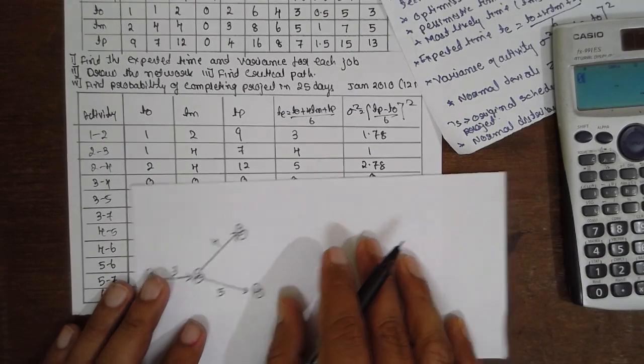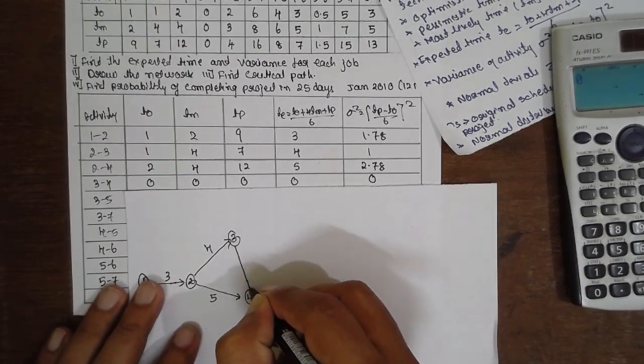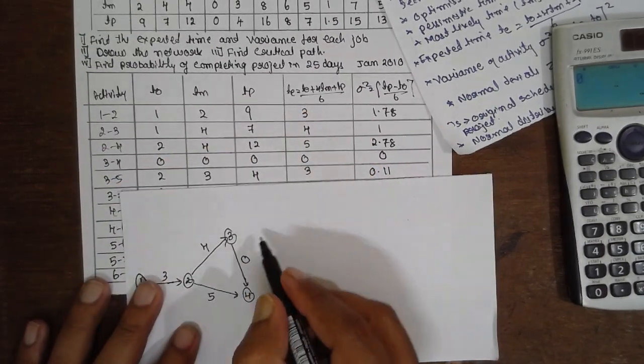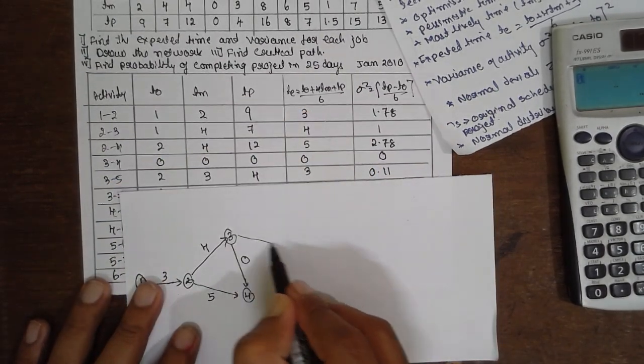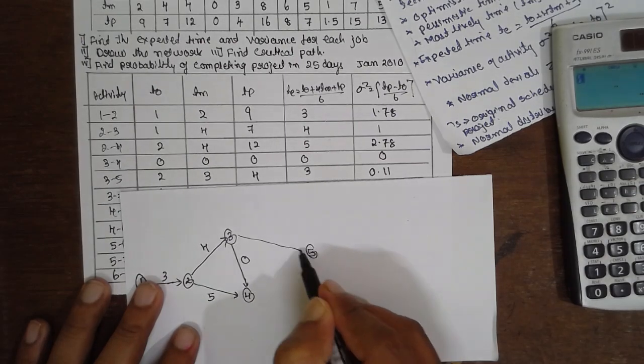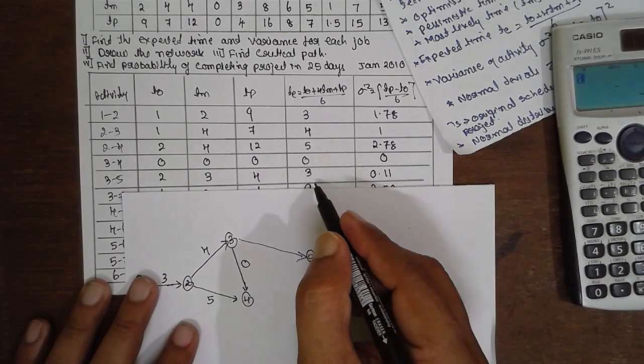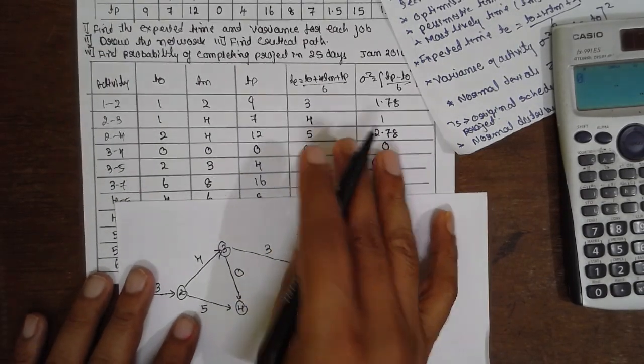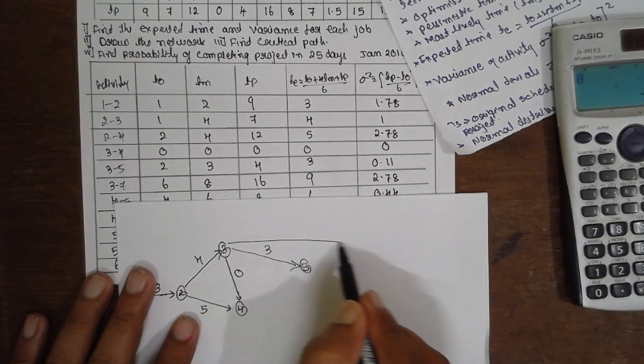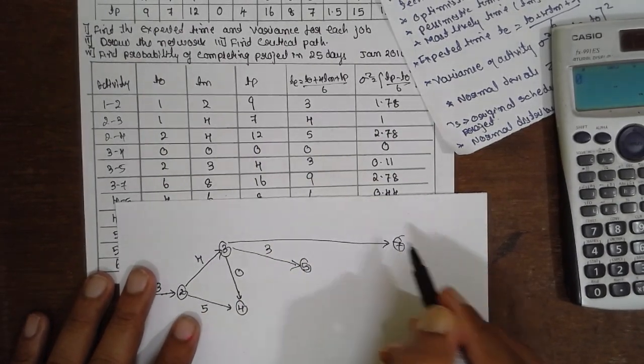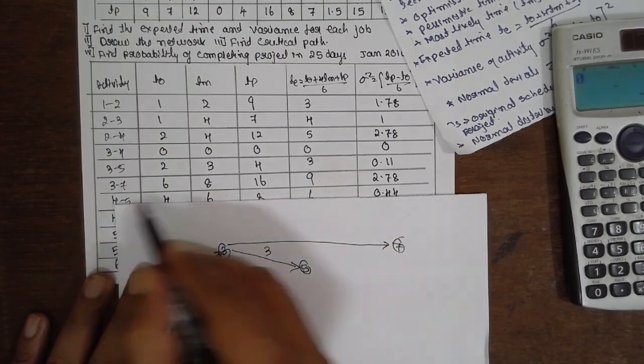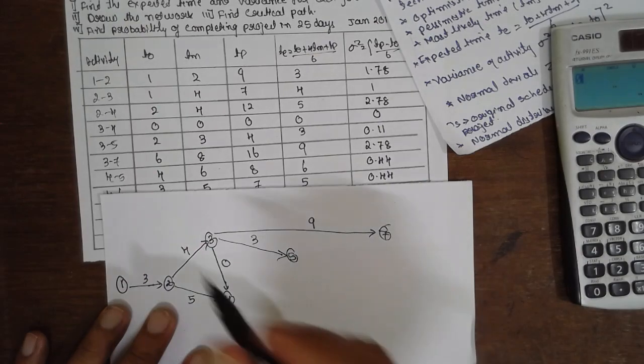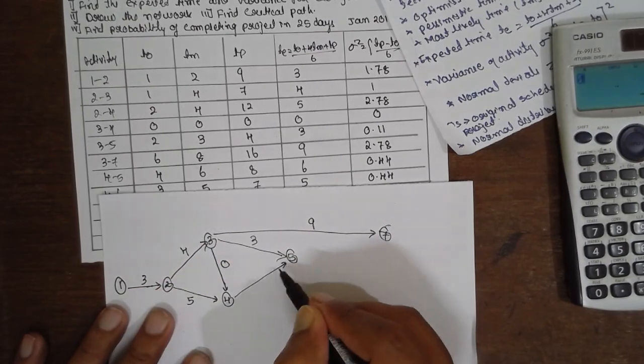The value is 5. 3-5, 3-4. The value is 0. 3-5. 3-5, the value is 3 here. 3-7. 3-7, 3-7, 9. 4-5, 6.